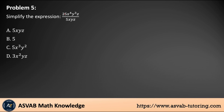Problem number five: simplify 25x⁴y³z over 5xyz. Remember that division of like variables means you subtract the exponents — for example, x⁶ divided by x² equals x to the fourth. Applying this: 25 divided by 5 gives 5; x⁴ divided by x gives x cubed; y³ divided by y gives y squared; and z divided by z cancels out. The final answer is 5x³y², option C.